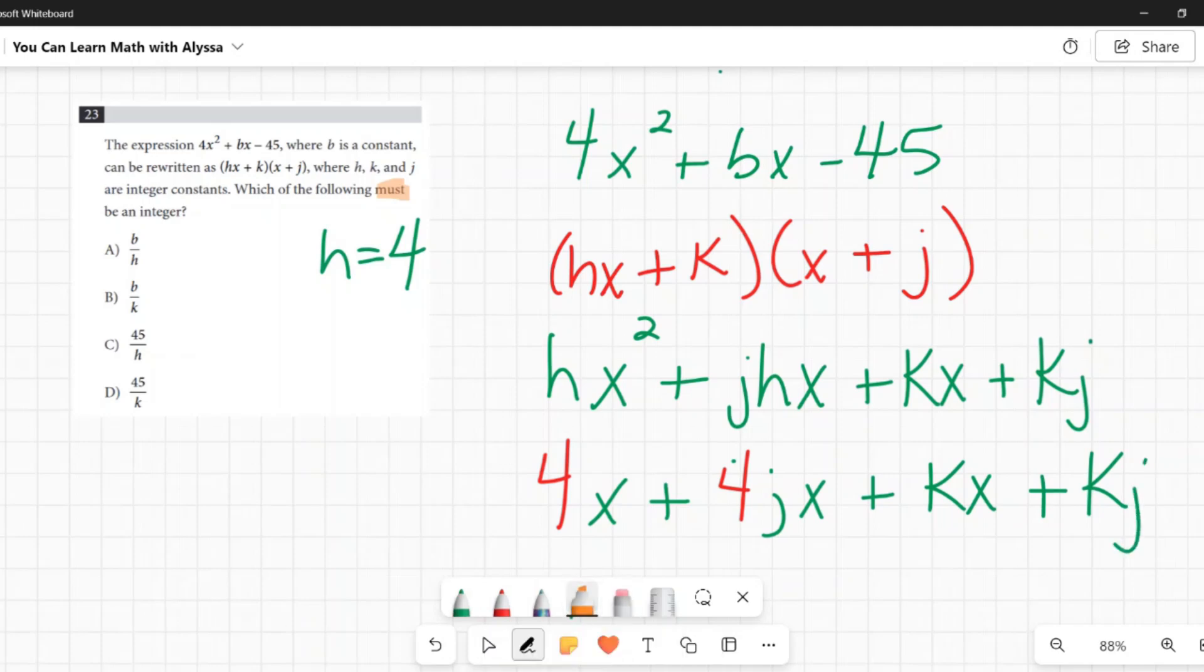The next one is this last one, k times j. There's no x. That must be negative 45. And I know they're both integers, right? So I know k times j equals negative 45. All right, so I can assume that there's going to be some combination here and the negative could be on either one. k could be 1, j could be 45, and either of those, one of them has to be negative to get that negative.